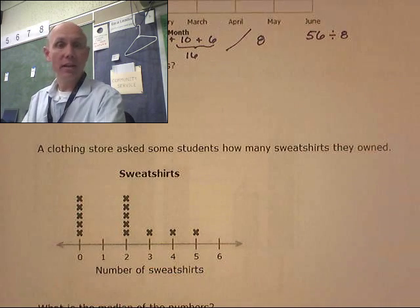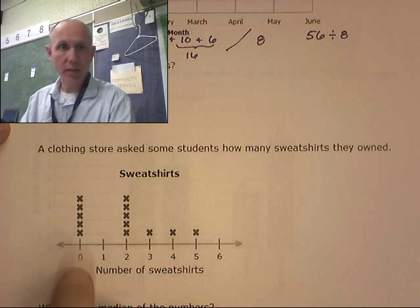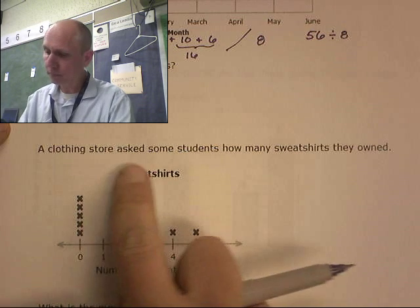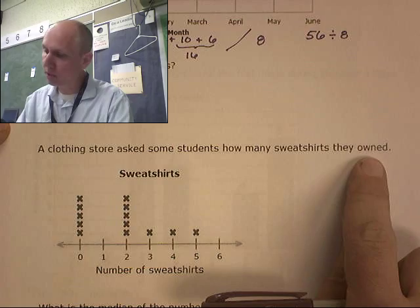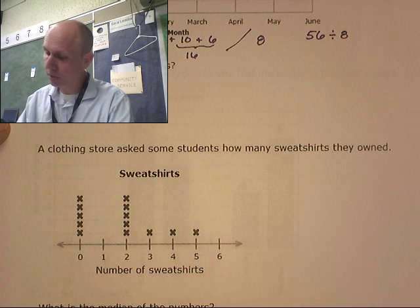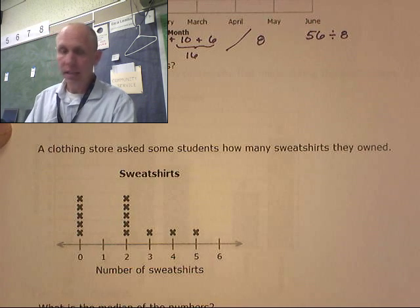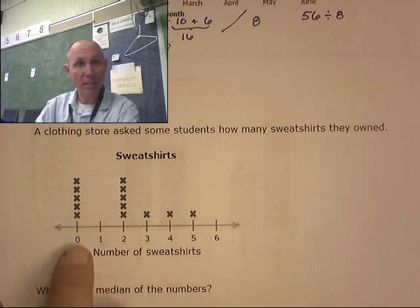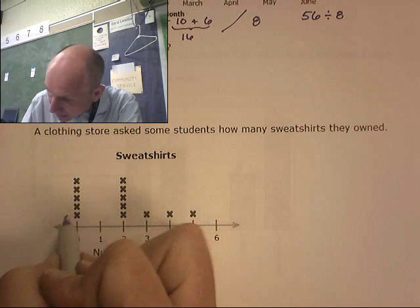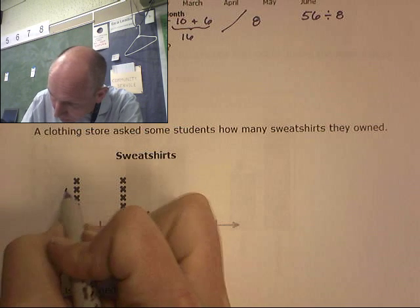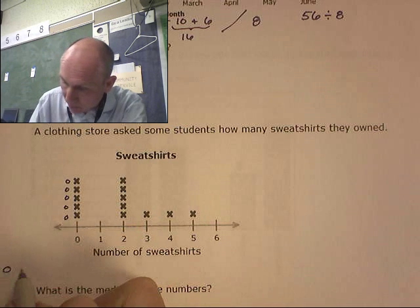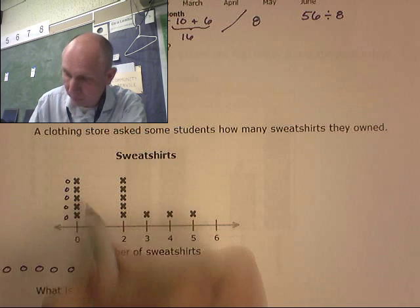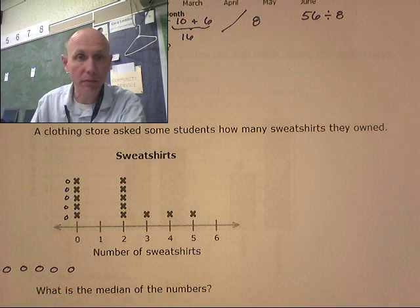This is an interesting way of showing data — this is called a line graph. A clothing store asks some students how many sweatshirts they owned. What is the median of the numbers? Well, we have to be able to read this. What this means is this is a zero, zero, zero, zero, zero. Five kids said zero.